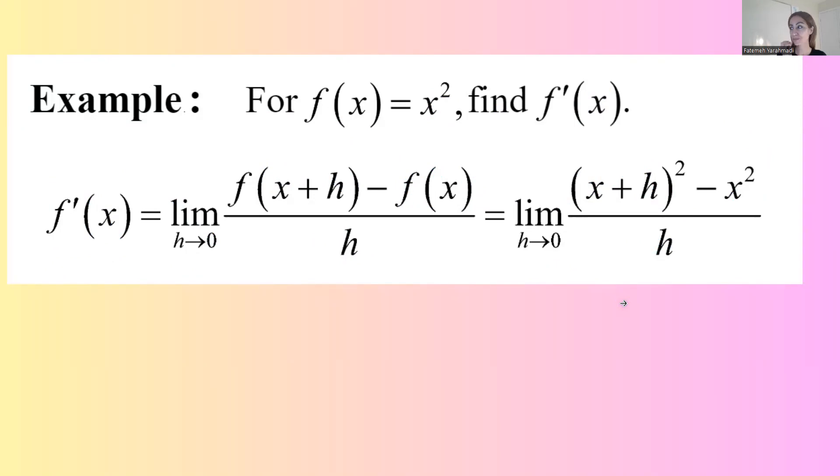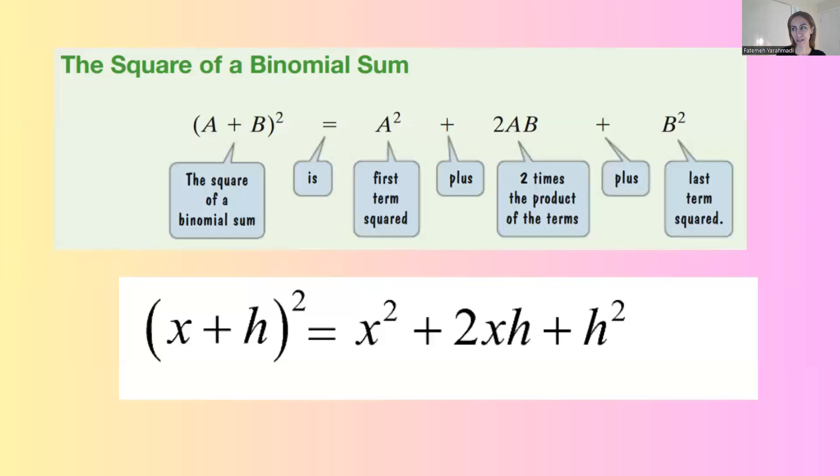Now we need to apply algebra and simplify it as much as we can to find the derivative of this function. Remember the formula from algebra for the square of a binomial sum? It basically says a plus b to the second is a squared plus 2ab plus b squared.